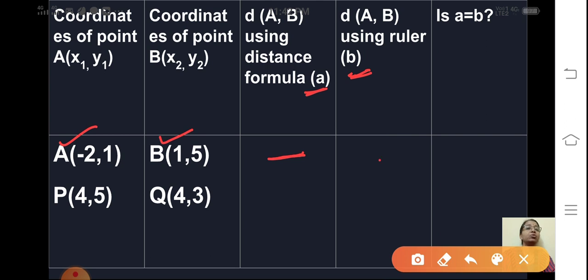You have to actually measure the distance between these two points with the help of scale. And that value you write here in this column and consider it as B.